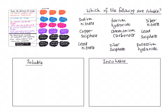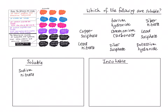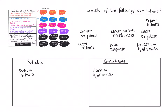Let's look at which of the following are soluble. The first one is sodium nitrate — all sodium compounds are soluble, and all nitrates are soluble, so that's soluble. The next one, barium hydroxide: all carbonates and hydroxides are insoluble, except potassium, sodium, and ammonium. This is barium hydroxide and it isn't one of the exceptions, so barium hydroxide is insoluble.